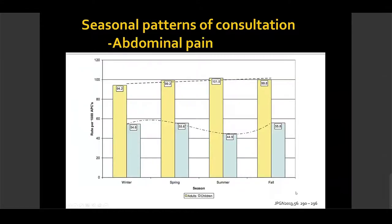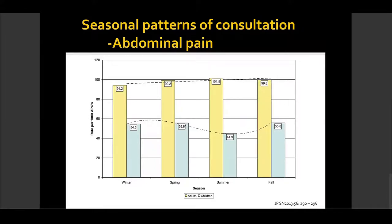An interesting large retrospective study published in 2013 used a database of 170 million patients — 20% children and 80% adults — demonstrating seasonal variation in abdominal pain consultations. We see in our own clinic how the frequency of patients consulting for chronic abdominal pain decreases during summer and increases sharply as the school year starts. It would be interesting to examine this pattern now during COVID, with many patients remaining at home.